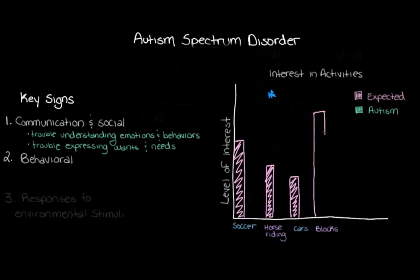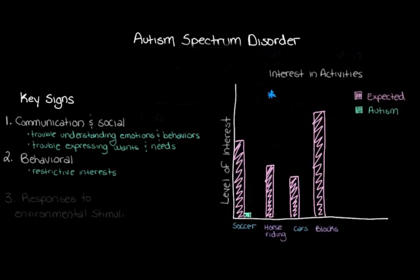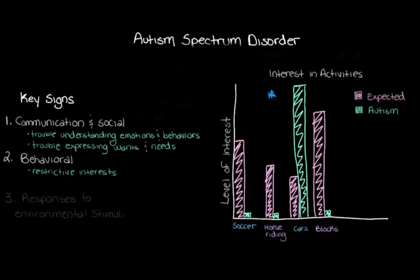For kids with autism spectrum disorder, one behavioral sign is what we call restrictive behavior — their interests can be really restricted or limited compared to what we might expect. And when they do have an interest in something, they can be quite a bit more interested than expected. So maybe a child with ASD shows no interest in any sports or blocks, but is really, really into cars — their interest level is way up high, and they would spend all day thinking, playing, and talking about cars. Their interests are kind of restricted to that one area.